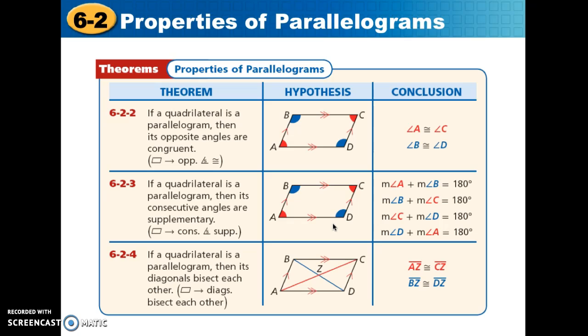We have a few more. We have opposite angles being congruent. So in 6-2-2, you see angles A and C are congruent, the red ones, and then we have angles B and D are congruent. Those are the blue ones. We also have a condition in 6-2-3 that says that consecutive angles or angles that are next to each other in the parallelogram are going to be supplementary, meaning they add up to 180. So we can add A and B and get 180. We can add angles B and C and get 180. We can add angles C and D and get 180. We can add angles D and A, but they all have to be consecutive, meaning one right after the other.